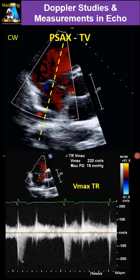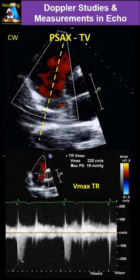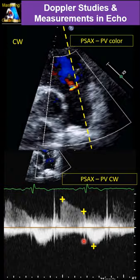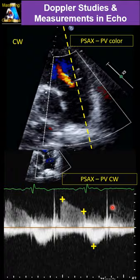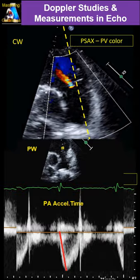Then we do Doppler on the PLAX on the tricuspid valve — the same way, continuous — and measure V-max. Then we go to the pulmonary valve on PLAX, repeat continuous Doppler. If we have significant PI, we measure peak and end-diastolic, and finally peak pulmonary continuous. Then put pulse Doppler exactly before the valve, place the sample volume, and measure acceleration time.